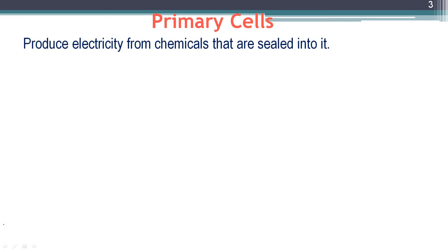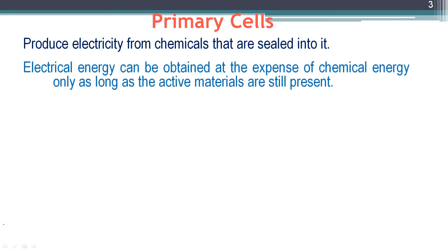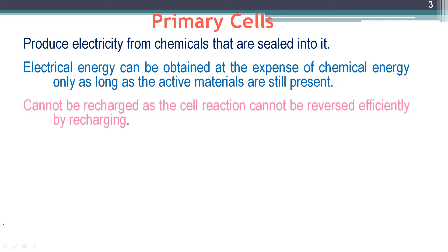Primary batteries produce electricity from chemicals sealed into them. These chemicals undergo a chemical change to produce electricity, and electrical energy can be obtained at the expense of chemical energy only as long as the active materials are still present. Once the reactants are exhausted, the battery loses its capacity to produce electrical energy. These batteries cannot be recharged.